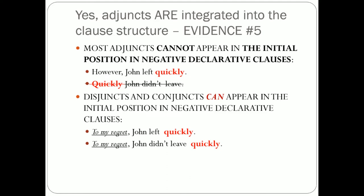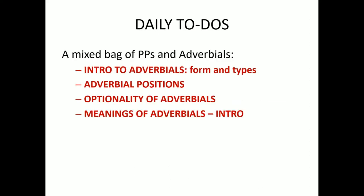Intuitively we feel that disjuncts and conjuncts are separate from the rest of the clause. Negation, which operates at the level of a clause, doesn't stretch over the adjunct if you put it in the initial position — the negation starts from the negative word 'didn't.' But disjuncts and conjuncts are completely immune to this. And with this, believe it or not, we finished the intro to adverbials.